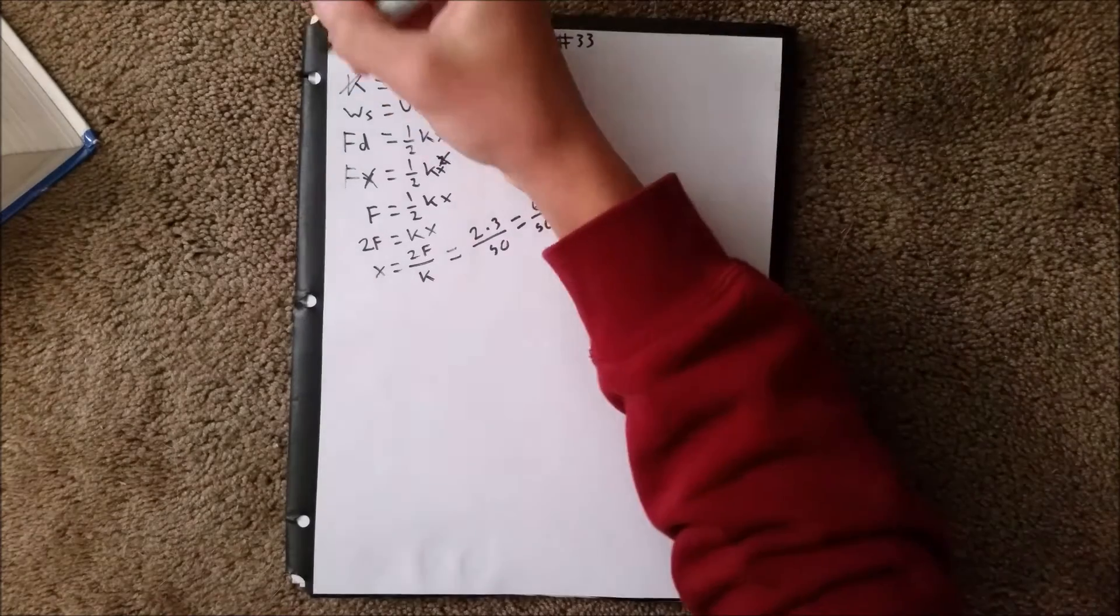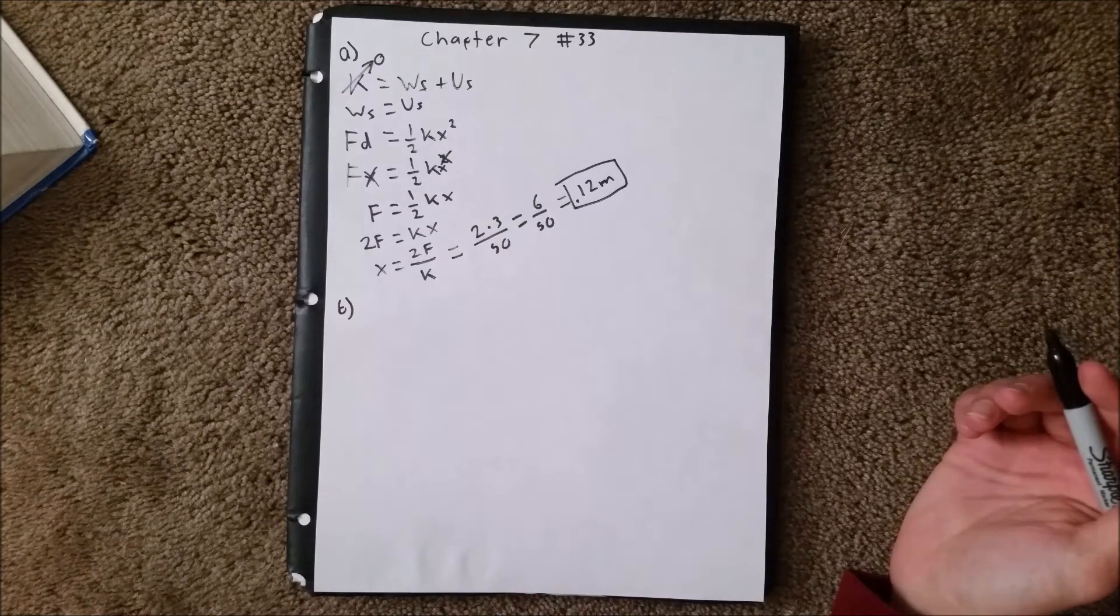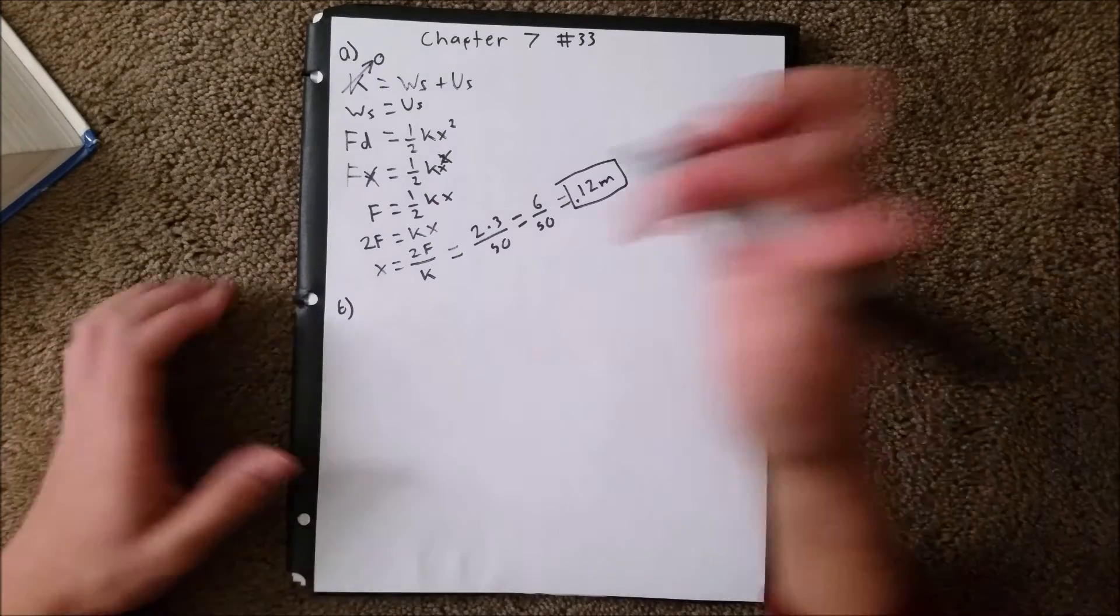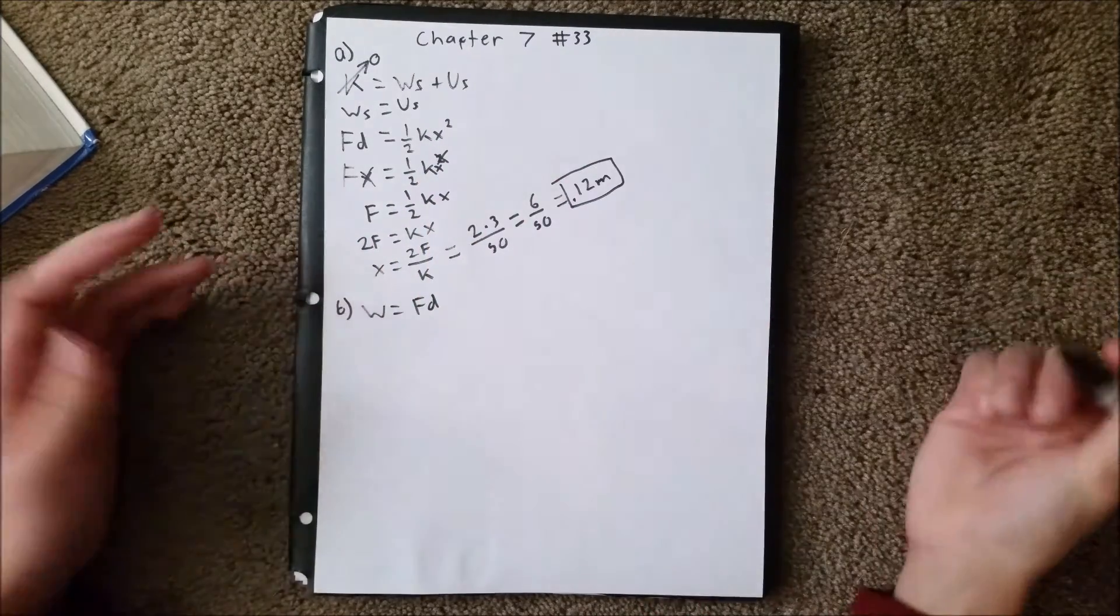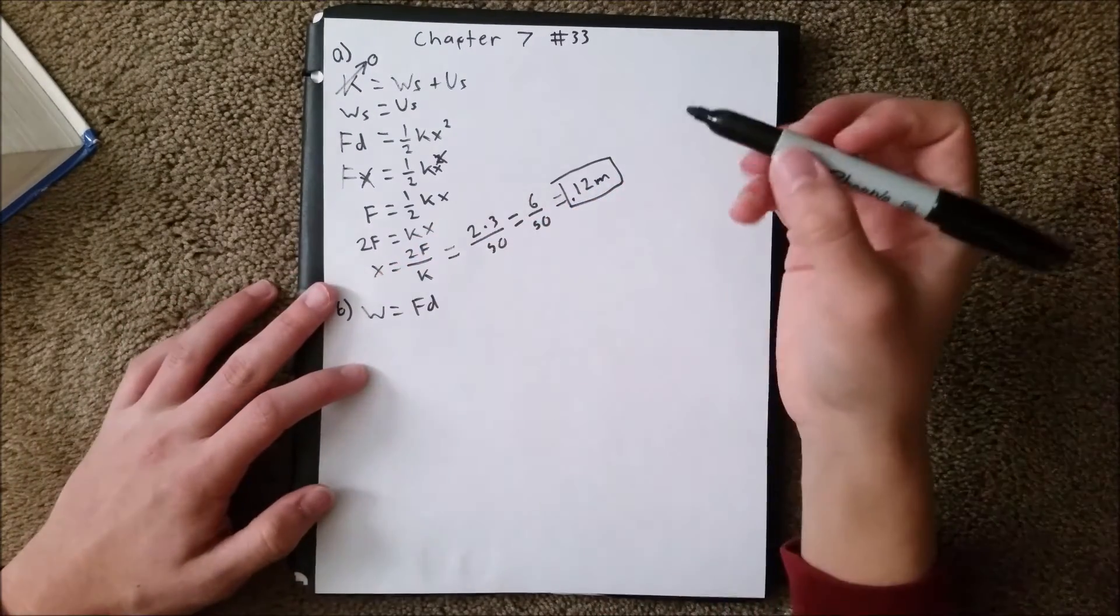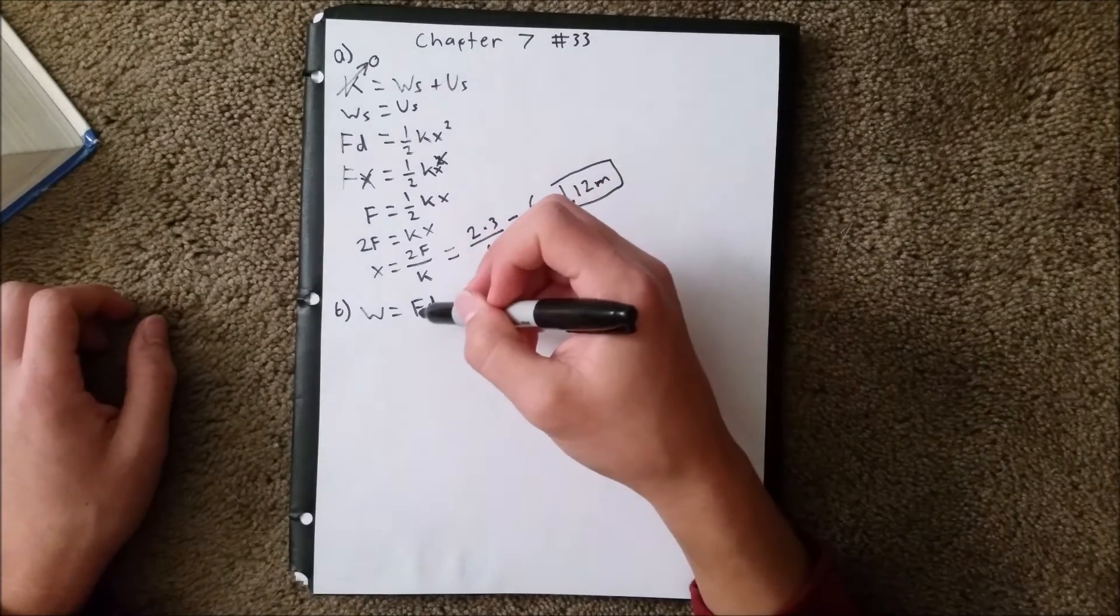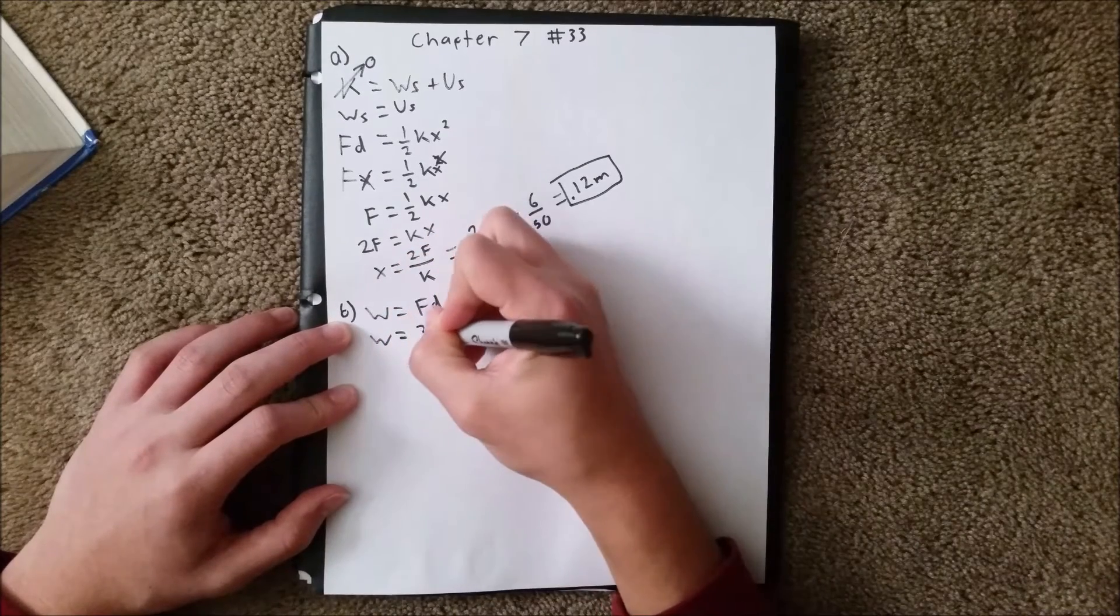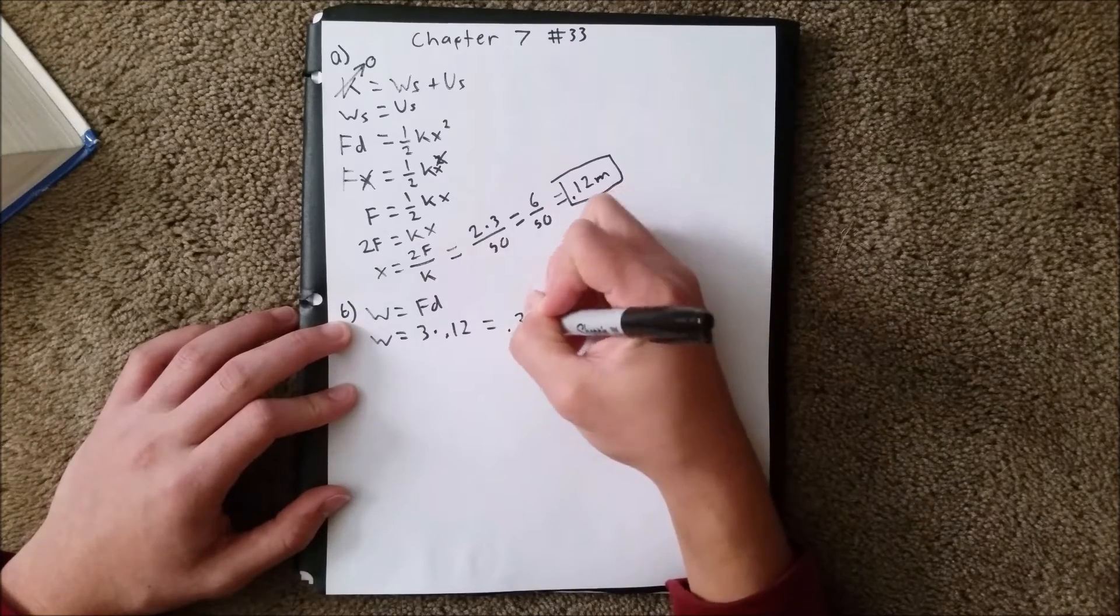Now for part B. Part B asks for the work that has been done on the block by the applied force. Like we have set up, work equals force times distance. We just found the distance, and we know the applied force is 3, which is from the problem. So we can write work equals 3 times 0.12, which equals 0.36 joules.